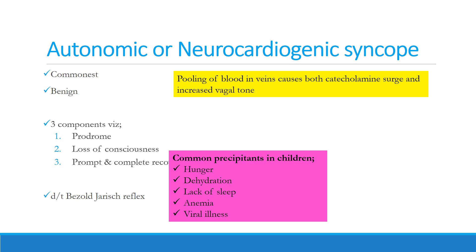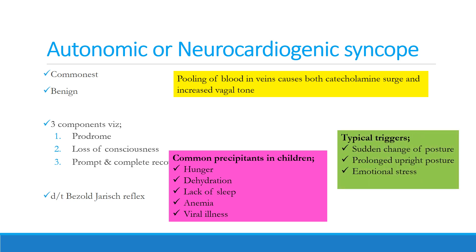Common precipitants of autonomic syncope in children include hunger (such as skipping breakfast), dehydration (e.g., mid-noon sports), lack of sleep (e.g., late-night parties), anemia, and viral illness. Typical triggers include a sudden change in posture, prolonged upright posture, and emotional stress.